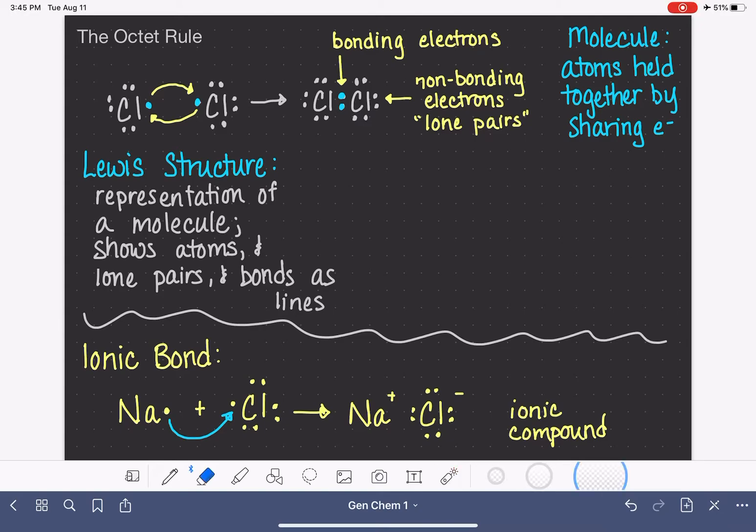And those bonding electrons are represented as lines. So if we take this Cl2 molecule and we wanted to turn it into a Lewis structure, we would show the atoms, we would show the lone pairs, and we would show the bond as simply a line between the two atoms. This is our bonding electrons. Each line represents two electrons that are being shared between the two atoms. So we all know as chemists that this line right here represents the sharing of two electrons between these two atoms.